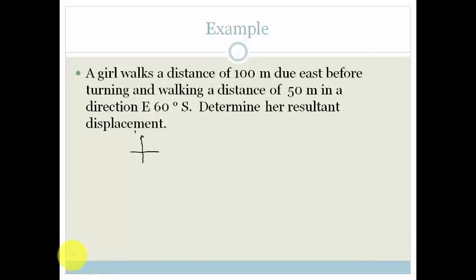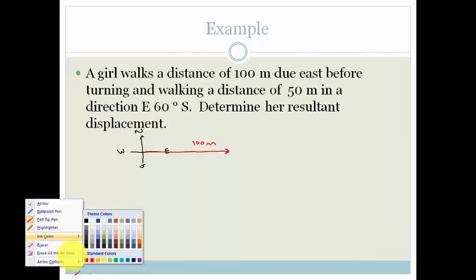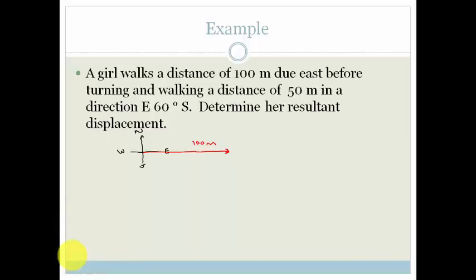So, north, south, west, east. And it says we need to draw 100 meters due east. So she goes 100 meters due east. But then she also travels 50 meters at an angle of 60 degrees south of east. So 60 degrees south of east is about here, and she does that 50 meters. Do you notice now that that is tail to tail? And remember, that is what we said the parallelogram was.